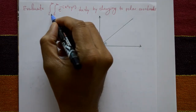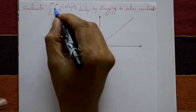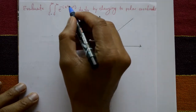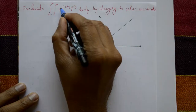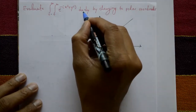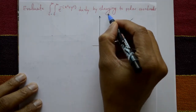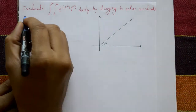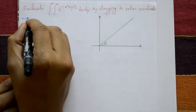Evaluate the integration of 0 to infinity, integration of 0 to infinity, e raised to minus of x square plus y square, dx dy, by changing into polar coordinates.